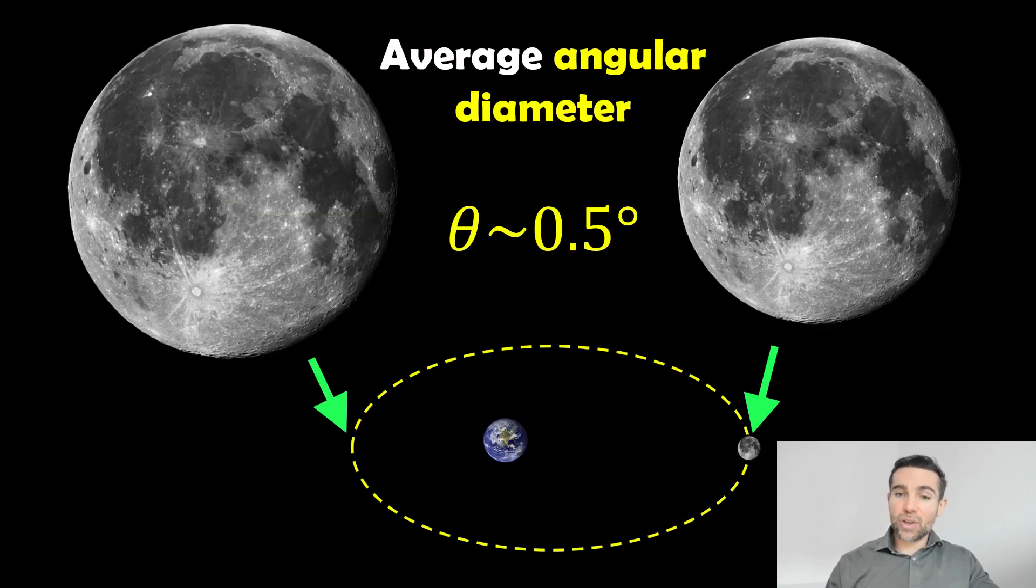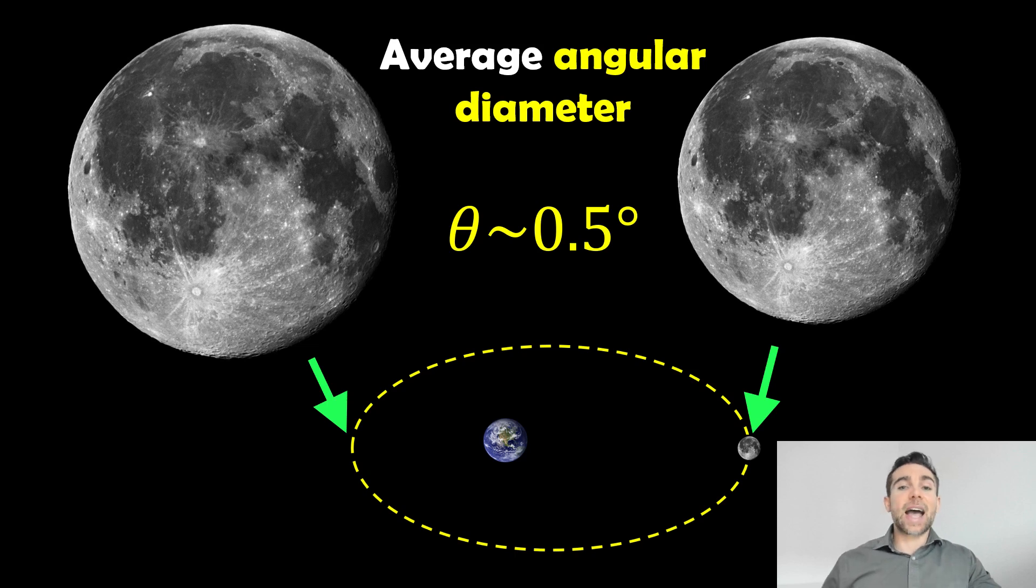Because the moon is moving away from the Earth and towards it on its elliptical orbit, its angular diameter does change during the course of its orbit. This is what gives rise to things like supermoons or micromoons. If we calculate the average angular diameter, it's around about half a degree. So now we've got a distance and an angular diameter, we can calculate the actual diameter of the moon.